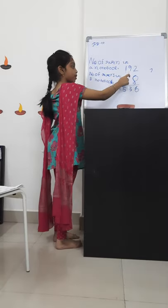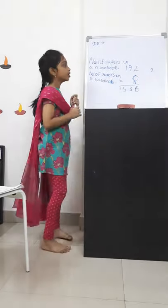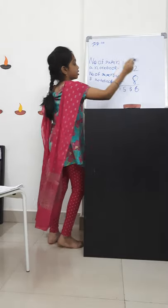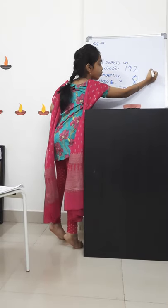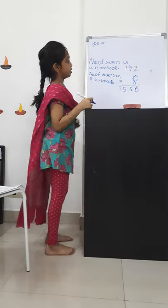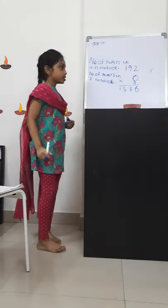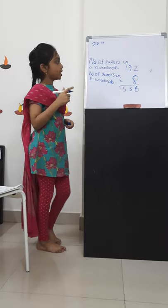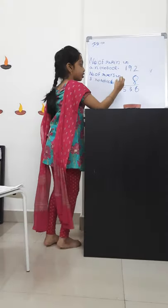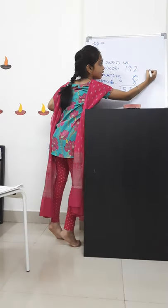2 multiplied by 8 is equal to 16. So, write 6 and carry over 1. Next, 9 multiplied by 8 equals 72, plus 1 equals 73. So, we write 3 here and carry over 7.